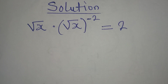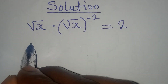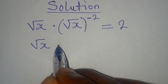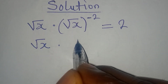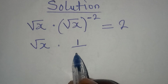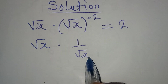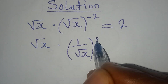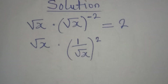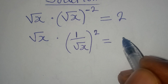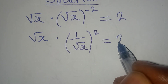So this is what we are going to do first. We have square root of x multiplied by 1 all over square root of x, and we have everything all squared, and we are having 2.